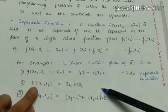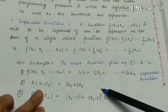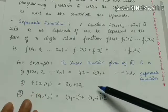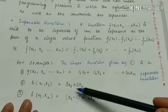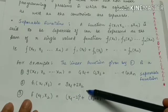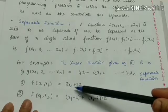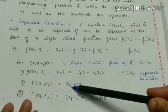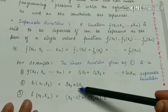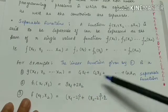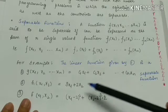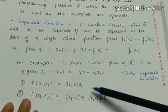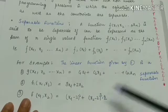For a second example, take h(x1, x2) = 3x1 + 2x2. Here h is a big function that can be written as the sum of two linear functions: 3x1 and 2x2. Therefore this function is separable.